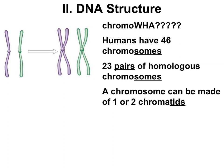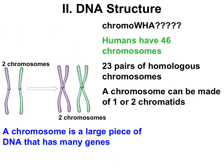Humans have 46 chromosomes. These chromosomes are organized into 23 pairs of homologous chromosomes, and each chromosome can be made up of one or two chromatids. A chromosome is just a really big chunk of DNA with a lot of genes on it. Instead of having all genes in one super gigantic chunk, the genes are divided up — in humans, there are 46 big chunks of DNA called chromosomes.